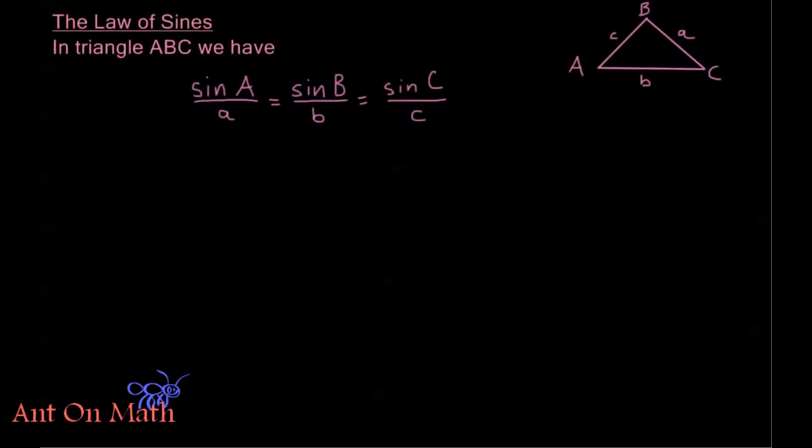Hello and welcome back to Ant On Math. In this video, we're going to take a closer look at our law of sines and see some examples. So just a quick review. For our law of sines, we have this proportionate equality where the sine of an angle over the corresponding side is equal to the sine of any other angle over its corresponding side. In particular, sine of A over a is equal to sine of B over b is equal to sine of C over c.